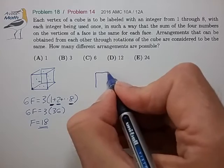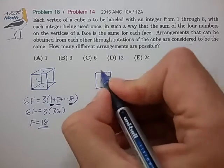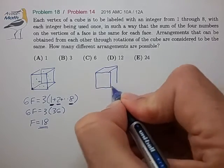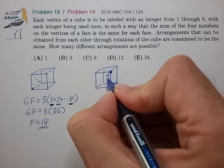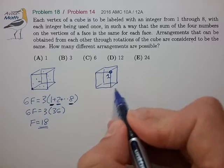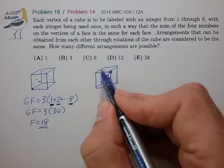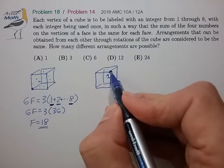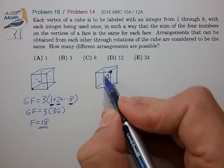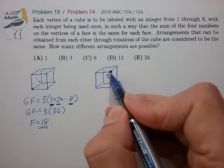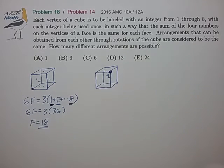So we're going to draw a cube again. And we're going to choose this anchor point to be the number one. And so however we arrange the numbers after choosing this, we can consider that to be a unique arrangement provided we can't just spin it around the long axis through the number one. And we'll see how that works in a bit.